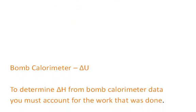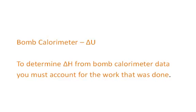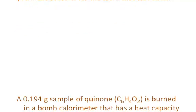The bomb calorimeter, because it's a constant volume situation, will give us information concerning delta U, because delta U in this case will equal Q. There is no work done because the volume is held constant. To determine delta H, the change in enthalpy, from bomb calorimeter data, you must account for the work that was done, and we'll approximate that in the example shown now.